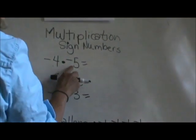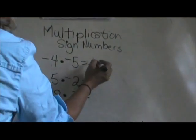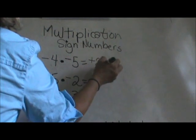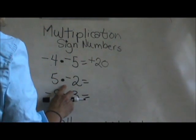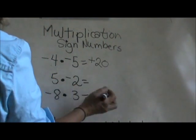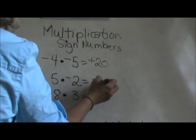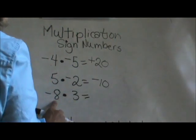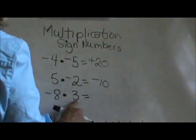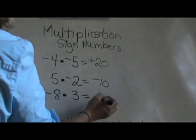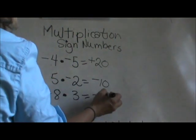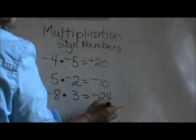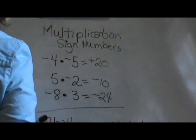Negative 4 times negative 5 is equal to positive 20. Positive 5 times negative 2 is equal to negative 10. And negative 8 times positive 3 is equal to 24. Okay, there are our examples.